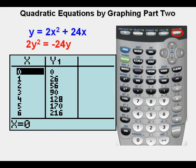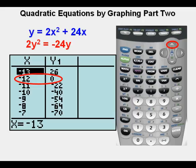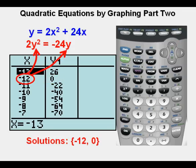He presses second, then graph for the table view. From here he pushes the up arrow button until he can see that second zero under the y1 column, which he finds here at x equals negative 12. At this point he could take that negative 12 and plug it into both sides of the original quadratic equation to see if both sides are equal at y equals negative 12.